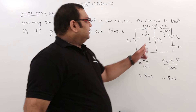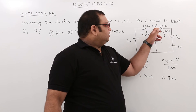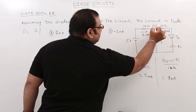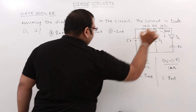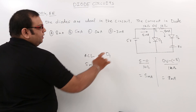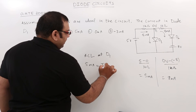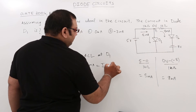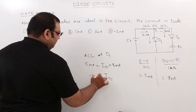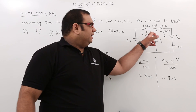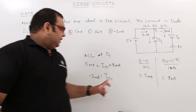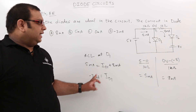Applying KCL at the D1 node: 5 milliamperes is entering, while I_D1 and 8 milliamperes are leaving. So I_D1 = 5 mA − 8 mA = −3 milliamperes. This negative value means the current is in the reverse direction from our initial assumption that D1 is forward biased.